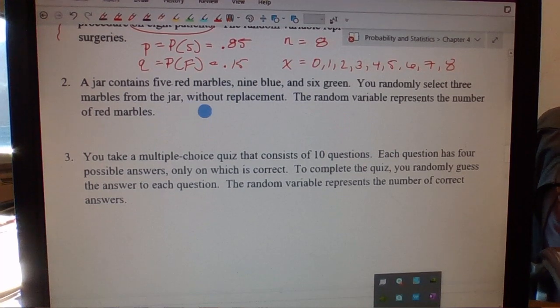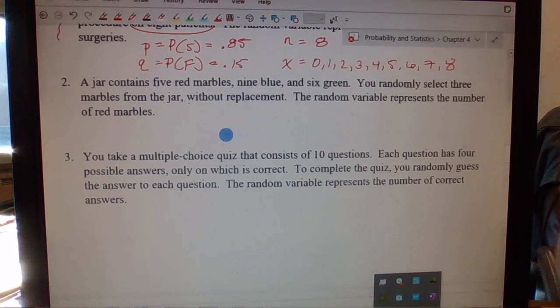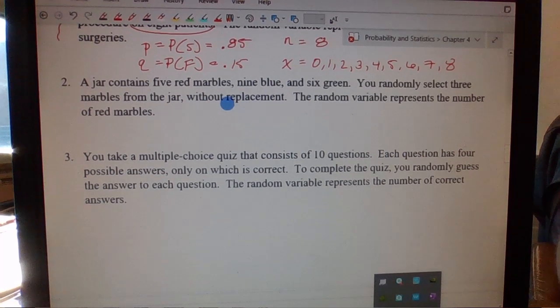So a jar contains five red marbles, nine blue marbles, six green. It says you randomly select three marbles from the jar without replacement.